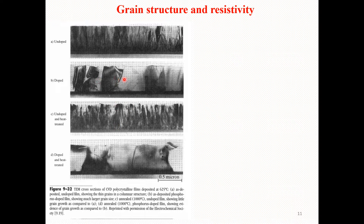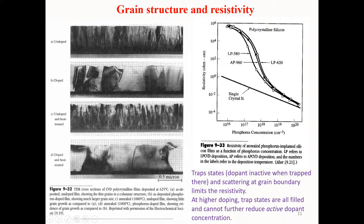Here you can see resistivity in ohm-centimeters plotted versus phosphorus concentration in the polycrystalline silicon. We observe resistivity as a function of phosphorus concentration per centimeter cubed. LP stands for low-pressure chemical vapor deposition at 580 degrees centigrade, and AP refers to atmospheric-pressure chemical vapor deposition at 960 degrees centigrade.